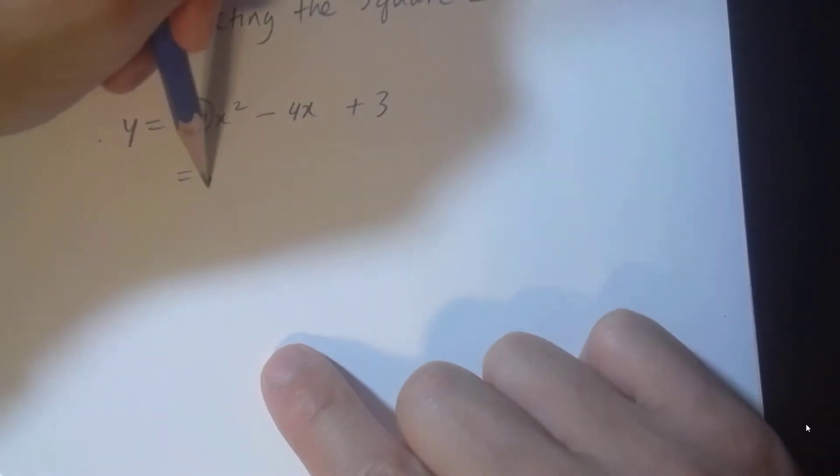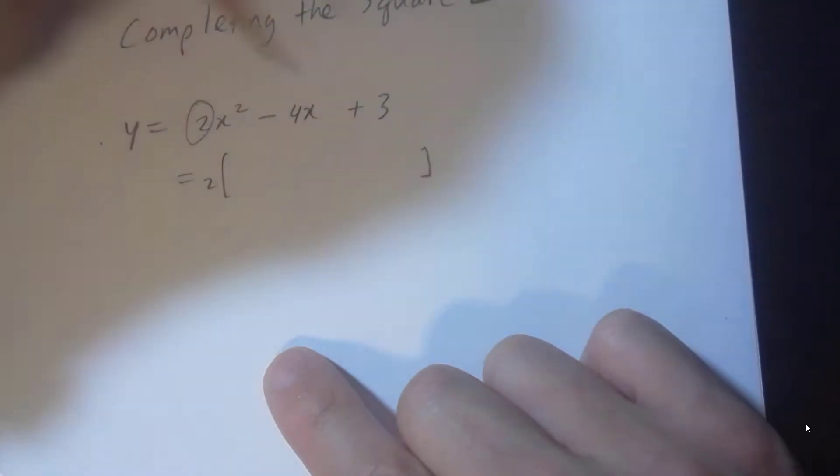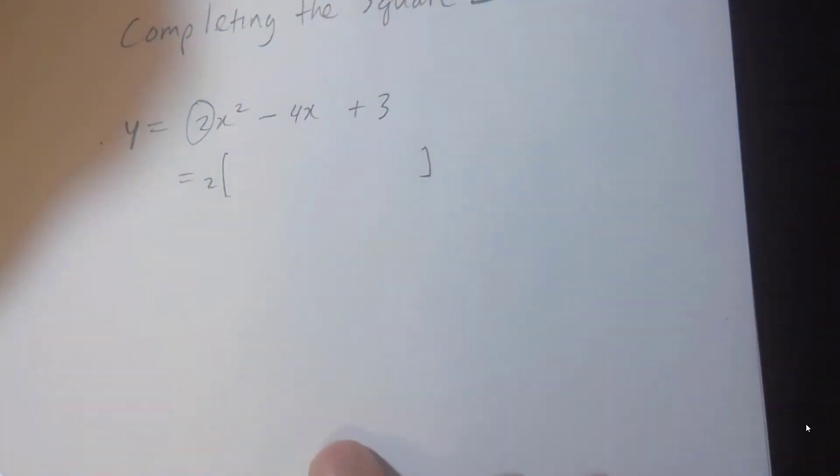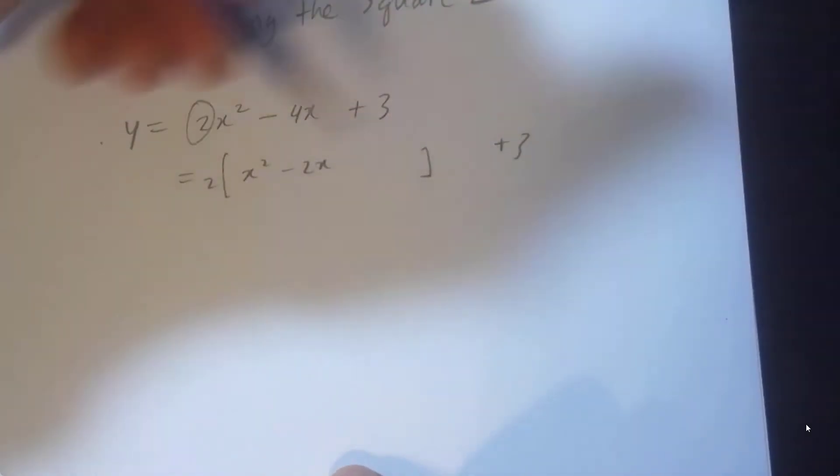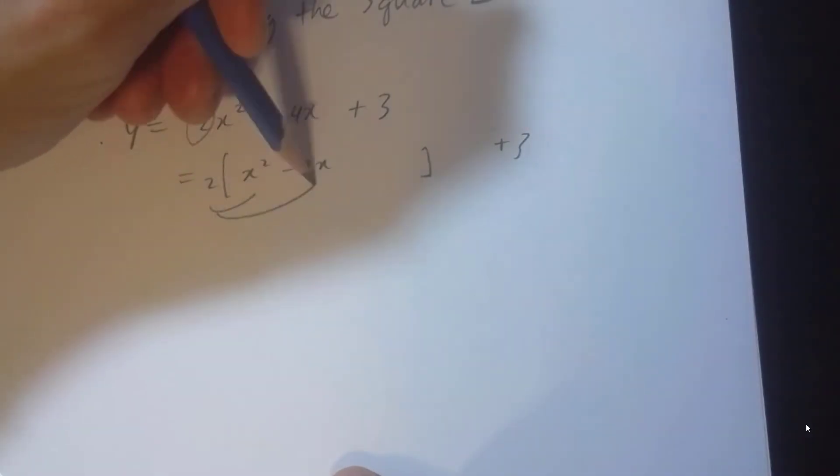Before you complete the square, I recommend that you factor out that coefficient. So we have x squared minus 2x plus 3. Double check that this is equivalent.